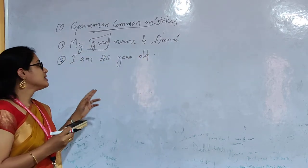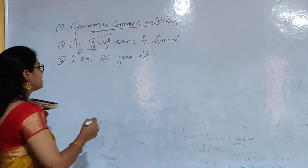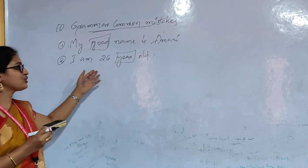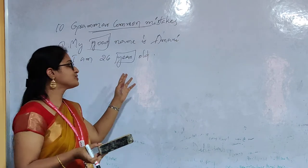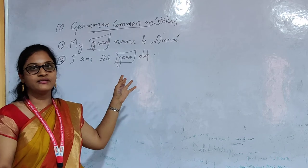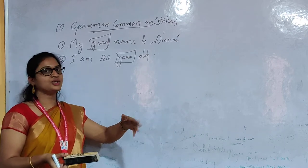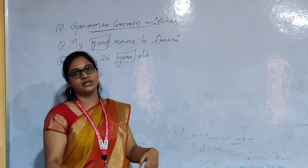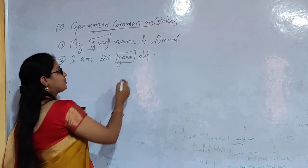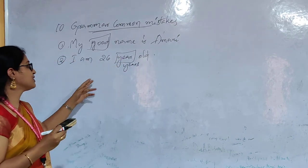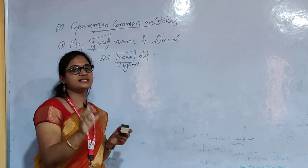Second mistake: 'I am 26 year old.' The word 'year' here is wrong. Because you are talking about a person — a human being — you should always use the plural form. If you are talking about a non-living thing, you can use the singular 'year'. For example: 'That table is 26 year old.' But for a person: 'I am 26 years old.' Always use the plural 'years' when referring to a person's age.